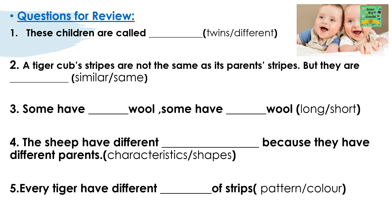These children are called twins or different. A tiger cub's stripes are not the same as its parent's stripes, but they are similar or same. Some have blank wool, some have blank wool — long or short. The sheep have different blank because they have different parents: characteristics or shapes. Every tiger has a different blank of stripes: pattern or color.